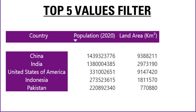There are three levels of filters in Power BI: report level, page level, and visual level. Report level filters are those that affect all the data in the report. Page level filters only filter the data on a given page. Visual level filters only filter the data on a given visual.